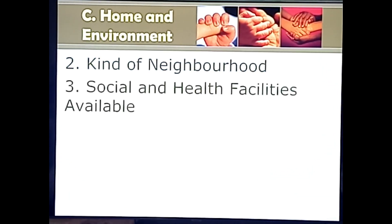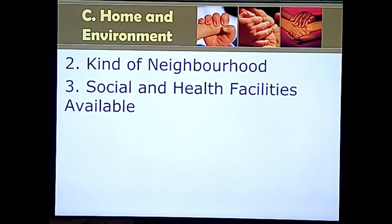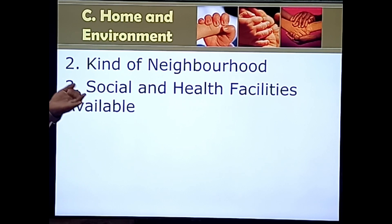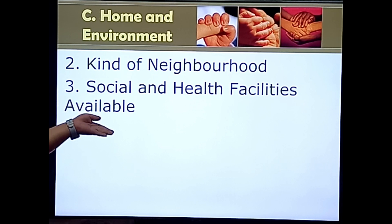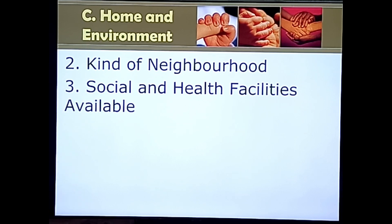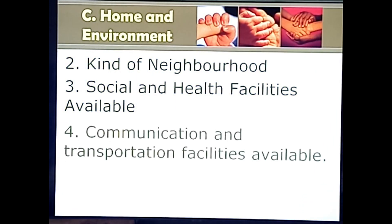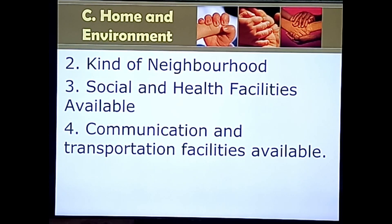Social and health facilities available in the community are also described — such as plaza, health center, wellness center, basketball court, senior citizen hall, and malls. All care facilities within the barangay should be described. Communication and transportation systems are also documented — whether the family uses cell phones, email, and what transportation options are available such as buses or tricycles.